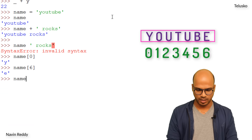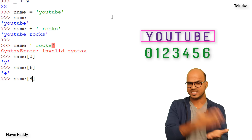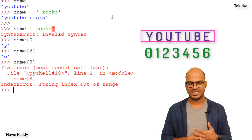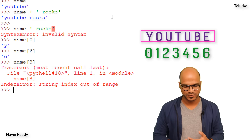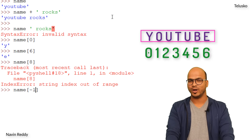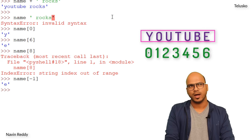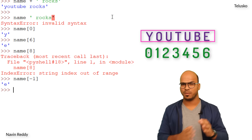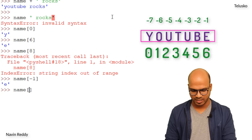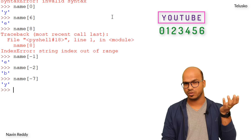What if I try index 8? We only have seven characters — indices zero through six — so trying index 8 gives an IndexError: string index out of range. You can't go beyond your limit. Can I use negative numbers? name[-1] gives 'e' — negative indexing goes right to left, starting from the end. name[-2] gives 'b', and name[-7] gives 'Y', the first character.